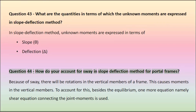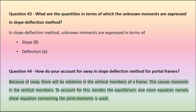Question 44: How do you account for sway in slope deflection method for portal frames? Because of sway, there will be rotations in the vertical members of a frame. This causes moments in the vertical members. To account for this, besides the equilibrium equation, one more equation — namely the shear equation connecting the joint moments — is used.